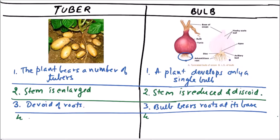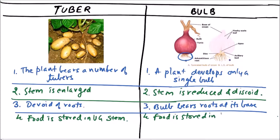In a tuber, food is stored in the underground stem. In a bulb, food is stored in scaly leaves; in some cases it may also be stored in leaf bases or buds.